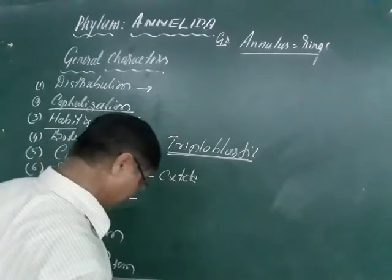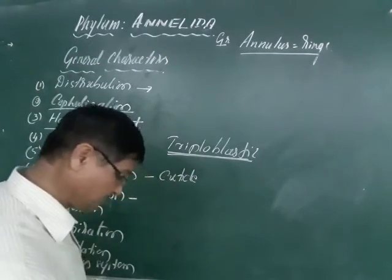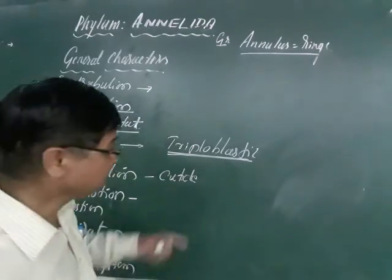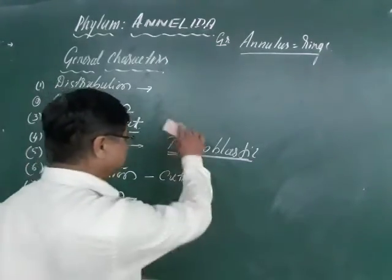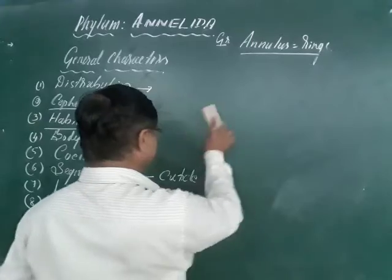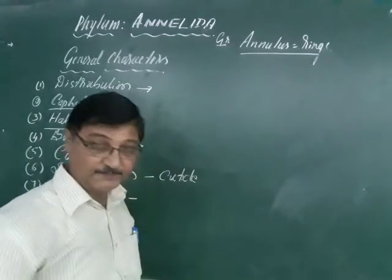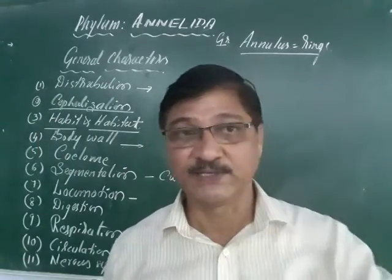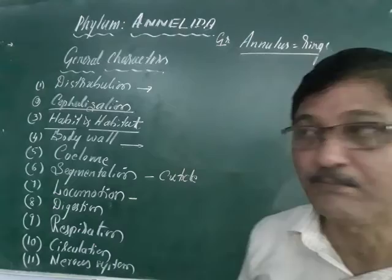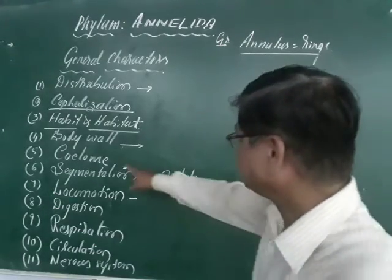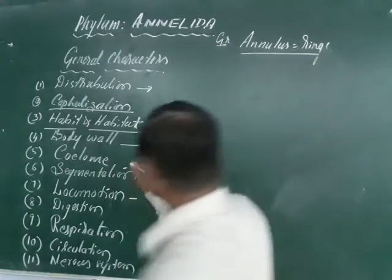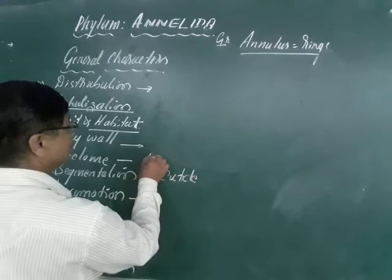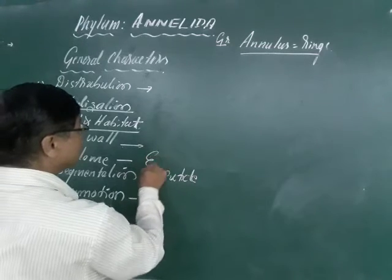The body wall is made by three layers, so they are called triploblastic forms. The endoderms — annelids — are triploblastic in nature. Triploblastic means three layers. Once the body wall is made by three layers, we may come across the body cavity.